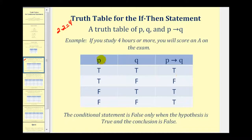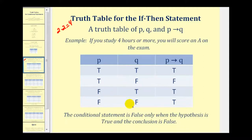We'll start off by listing p as true, true, false, false. Then q could be true or false when p is true, and q could be true or false when p is false. So we have four possibilities to consider when looking at if p then q.